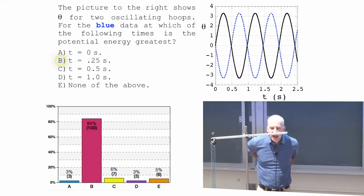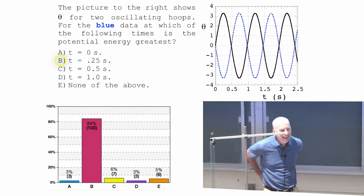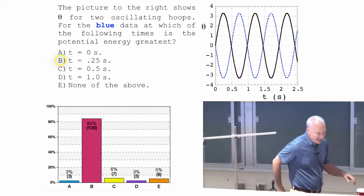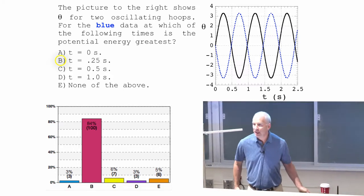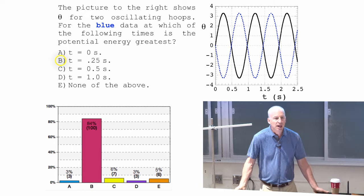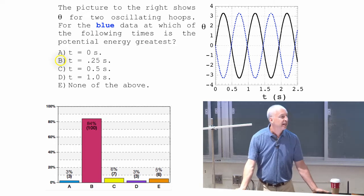Good job with your 7A. Equilibrium is the lowest potential energy and the highest kinetic energy.